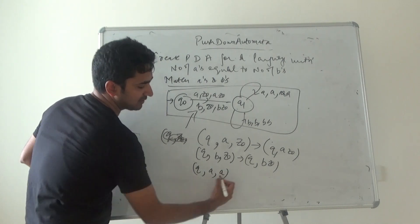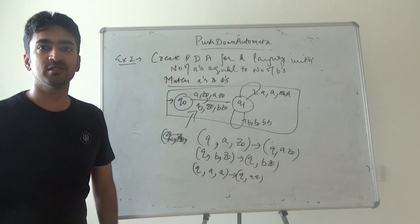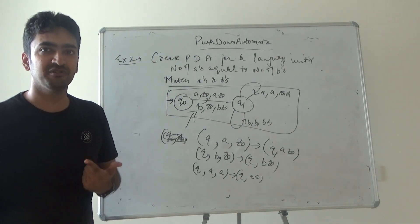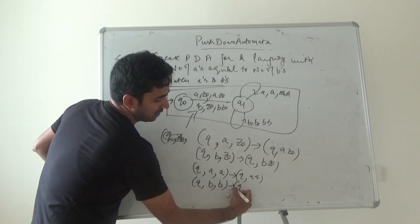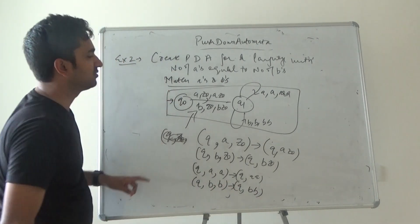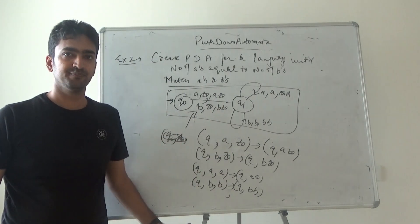Say any state gets b, it will get double b. So here q0 and q1 are solving these state values. Now the important thing: when any state has a and any b comes, it means b will match the a's.